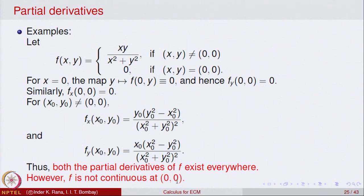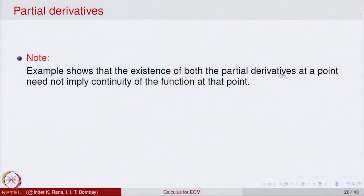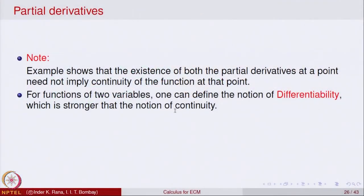This example shows that the existence of both partial derivatives at a point does not imply continuity of the function at that point. Unlike one variable where differentiability implies continuity, for functions of two variables the existence of partial derivatives is not sufficient to ensure continuity. One can define a notion of differentiability stronger than mere existence of partial derivatives, but we will not go into that in this course.